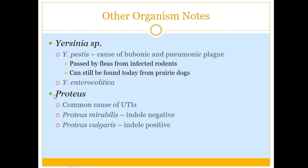Proteus is a very commonly seen organism and a common cause of UTIs. E. coli is still number one, but you will see a lot of Proteus with UTIs. There are two main Proteus species: Proteus mirabilis and Proteus vulgaris. The way you separate between these is a test called indole — indole will be negative for Proteus mirabilis and positive for Proteus vulgaris. We'll do this test in lab.